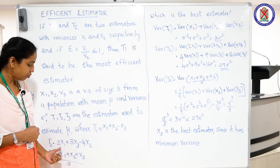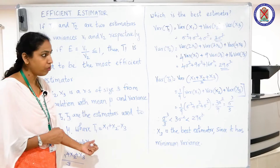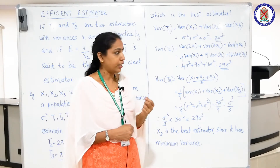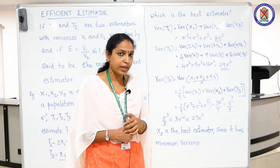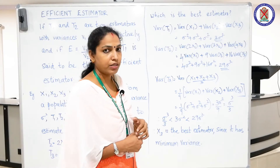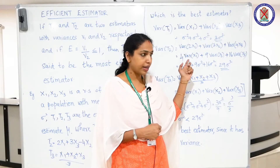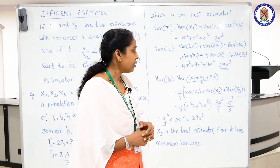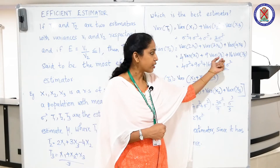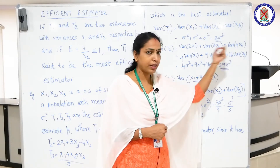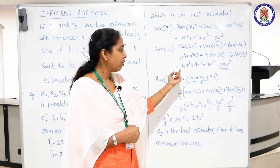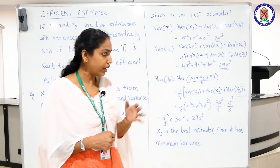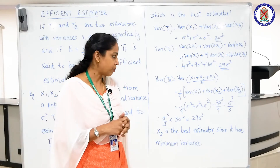Now for the second estimator: t2 = 2x1 + 3x3 - 4x2. Again the random samples are independent, so Var(t2) = Var(2x1) + Var(3x2) + Var(4x3). Using the property of variance, this equals 4*Var(x1) + 9*Var(x2) + 16*Var(x3) = 4 sigma squared + 9 sigma squared + 16 sigma squared = 29 sigma squared.